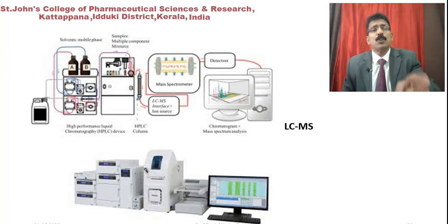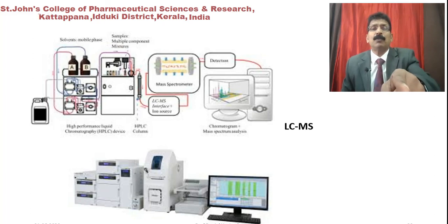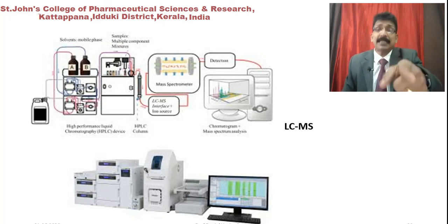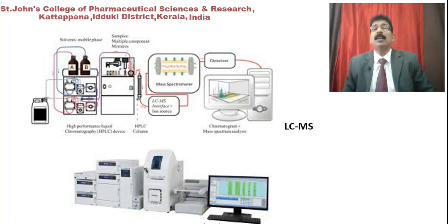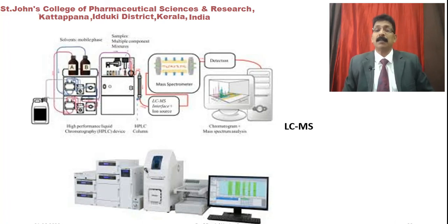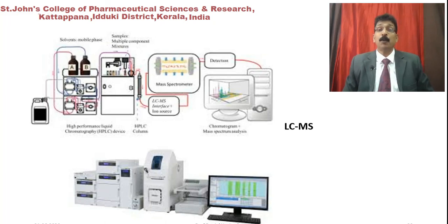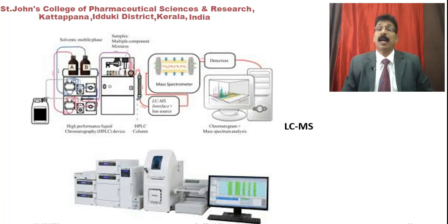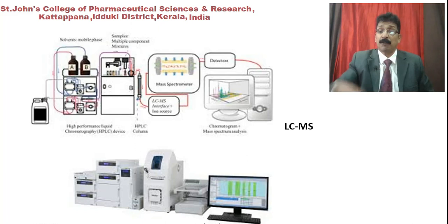In LC-MS, the solvent system enters the column, and when the compound is eluted it enters the mass spectrometer, which ionizes it. The detector identifies the mass number and the amount of substance through a connected computer system, providing peak values as a graphical output. A hard copy can be obtained for future reference.